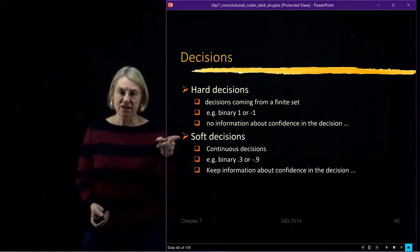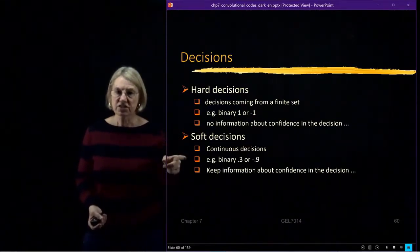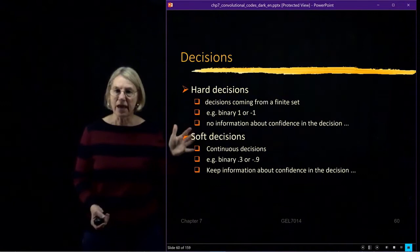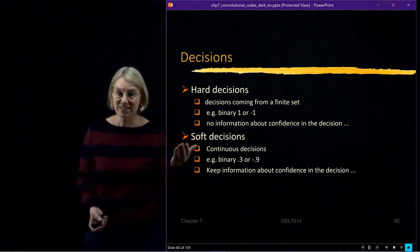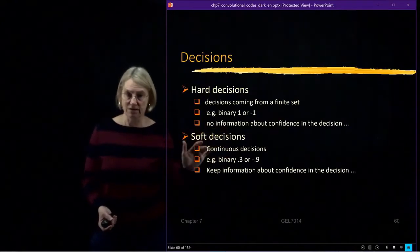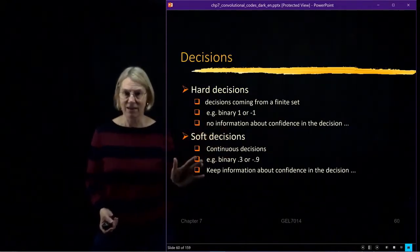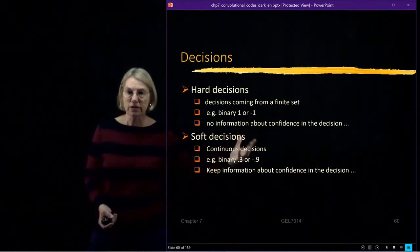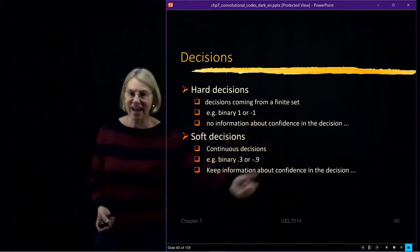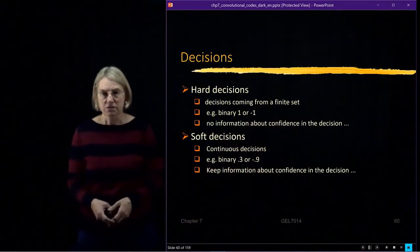Soft decisions are different. Soft decisions come from a continuity. It can be any values. So even though it's binary data, the soft decision could be something like 0.3 or minus 0.9. And now, we're keeping information from the demodulation part about how much confidence they have in the decision.